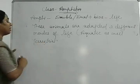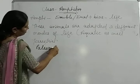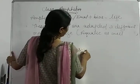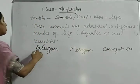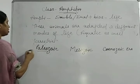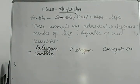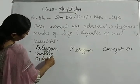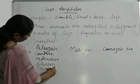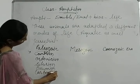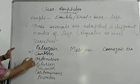When we talk about evolution, the phylogenic history is divided into three eras: the Paleozoic Era, the Mesozoic Era, and the Cenozoic Era. The Paleozoic Era is divided into six periods: Cambrian, Ordovician, Silurian, Devonian, Carboniferous, and Permian.